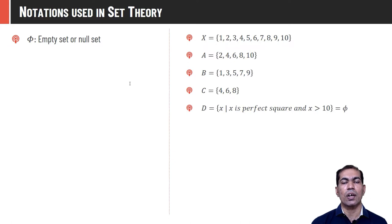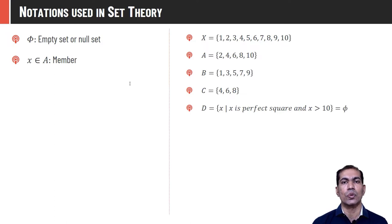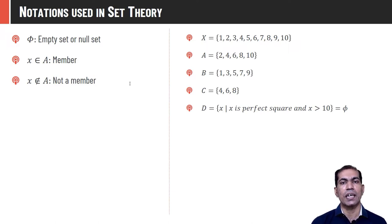Phi (φ) represents the empty or null set — a set containing no elements, so D is a null set. 'x ∈ A' means x is present in set A — for example, 2 is a member of A. 'x ∉ A' means element is not present in set A — for example, 3 does not belong to set A.